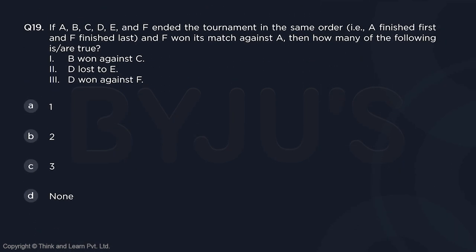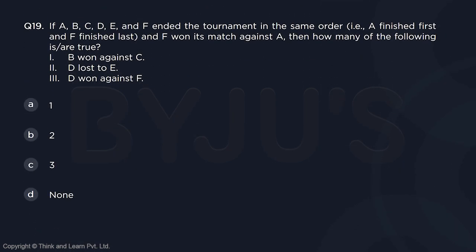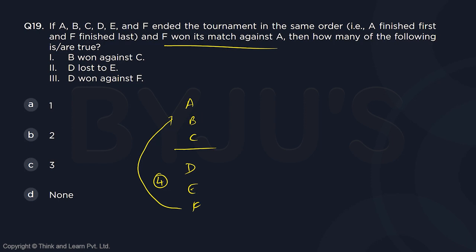Moving on to question 19. A, B, C, D, E, F again end in the same order, and F won its match against A. So the bottom will have 4 points — 3 among themselves plus 1 from beating A — and the top group will have 11 points. So the 11 and 4 combination gives top arrangements of 4, 4, 3 or 5, 3, 3, and bottom can be 2, 2, 0 or 2, 1, 1.